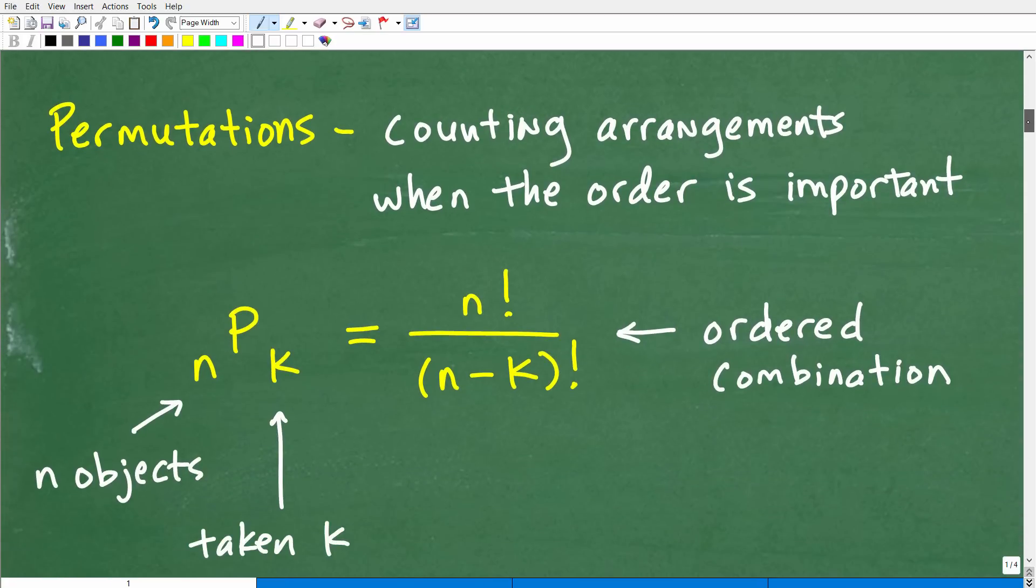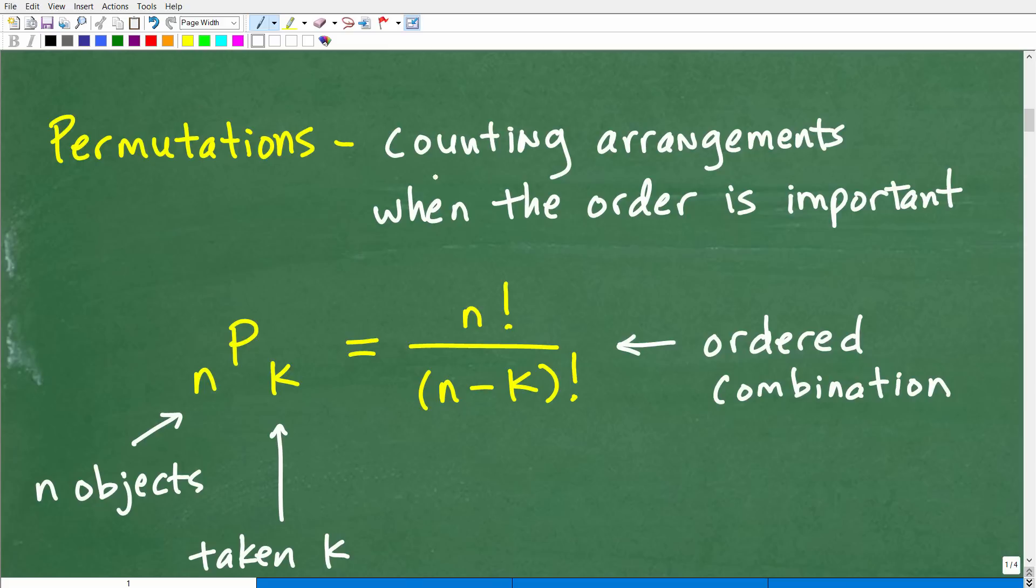So permutations are counting arrangements when the order is important. So some of you might be staring at this formula and be like, oh my goodness, this is so complicated. Don't worry, this is easy stuff. It's not that difficult. But a permutation is counting arrangements when the order is important.